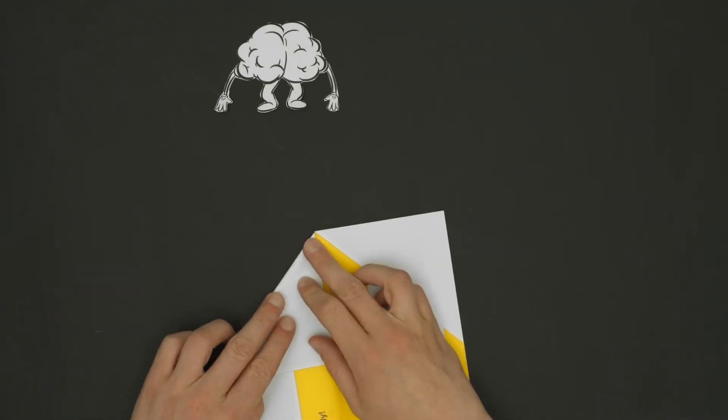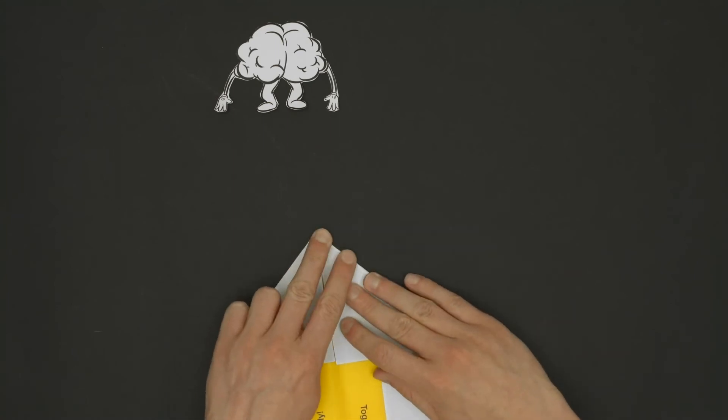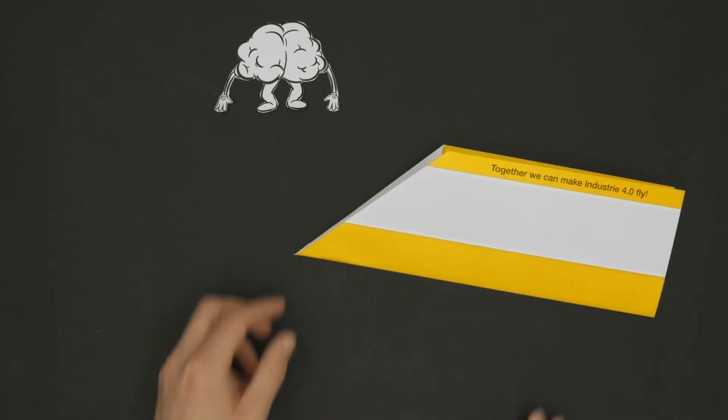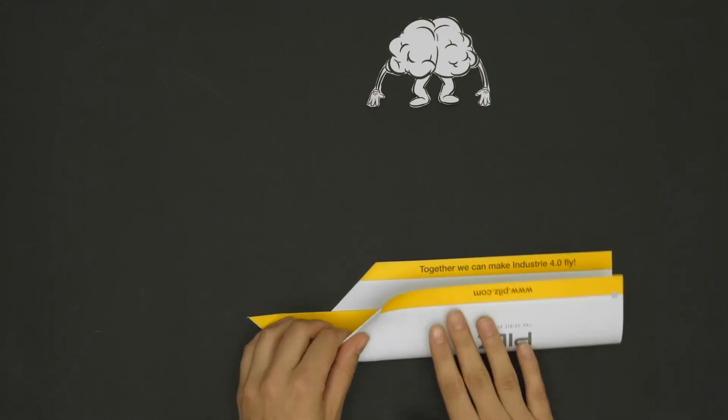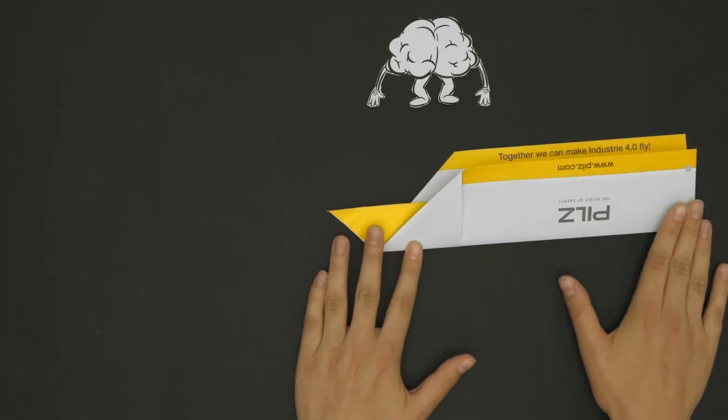This is possible because the instructions for the single work steps are right there on the product. So each module knows what to do without having to communicate with the central hub.